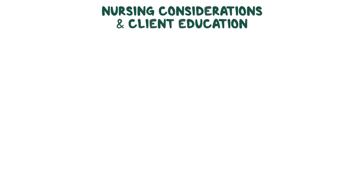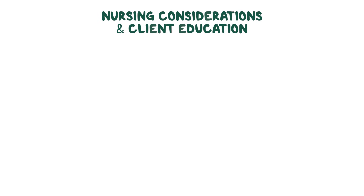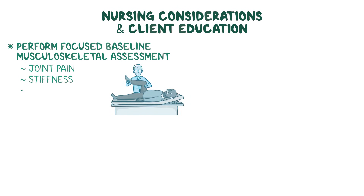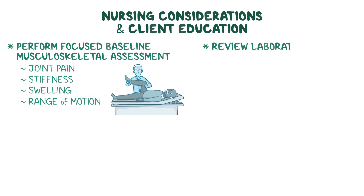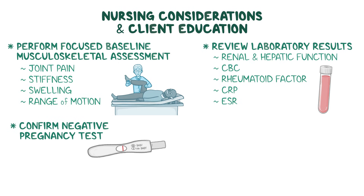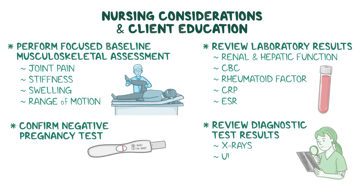When your client with rheumatoid arthritis is prescribed a non-biologic DMARD agent like methotrexate, first perform a focused baseline musculoskeletal assessment, checking for joint pain, stiffness, swelling, and range of motion. Then review their most recent laboratory test results, including renal and hepatic function, CBC, rheumatoid factor, CRP and ESR, and be sure to confirm a negative pregnancy test for clients of childbearing age. Lastly, review diagnostic test results including x-rays and ultrasound.